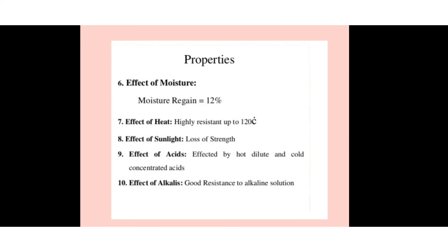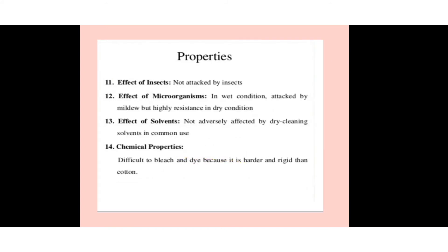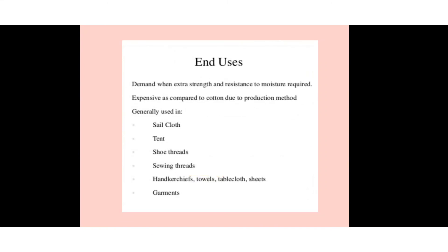Effect of sunlight: causes loss of strength. Effect of acid: affected by hot dilute and cold concentrated acids. Effect of alkali: good resistance to alkaline solutions. Effect of insects: not attacked by insects. Effect of microorganisms: attacked by mildew in wet conditions but highly resistant in dry conditions. Effect of solvents: not adversely affected by dry-cleaning solvents. Chemical property: difficult to bleach and dye because flax is harder and more rigid than cotton.